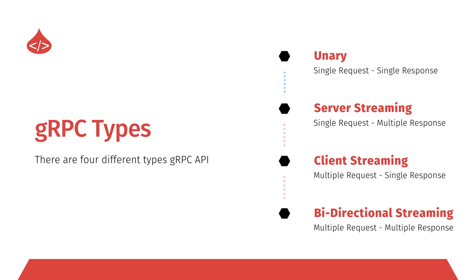Now let's look at the different types of gRPC APIs. In gRPC we can create four different types of APIs. The first is called Unary — gRPC Unary is similar to a REST API in the sense that the client sends a single request to the server and the server responds back with a single response. The same request-response pattern used in REST APIs is what gRPC calls the Unary API.